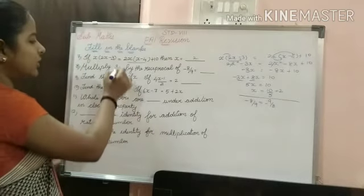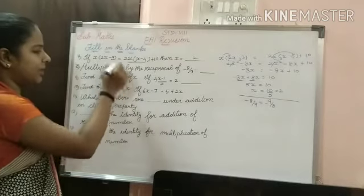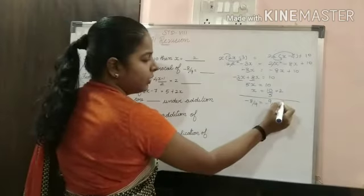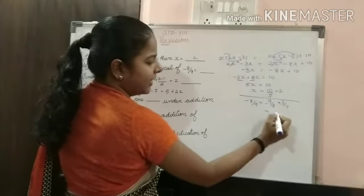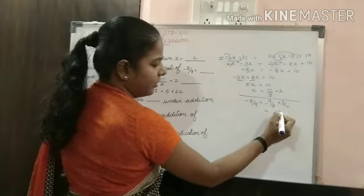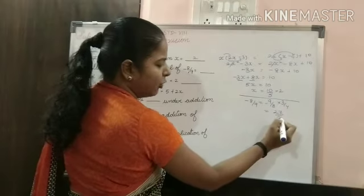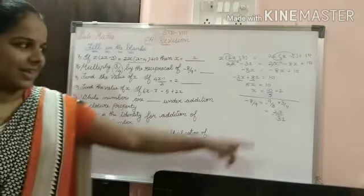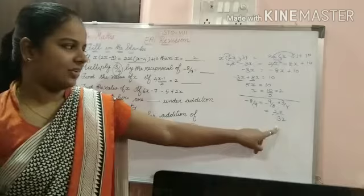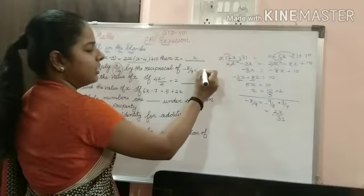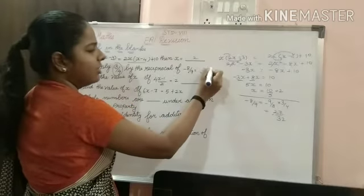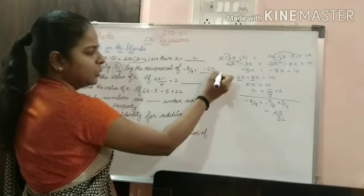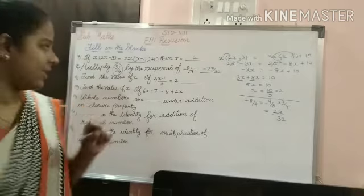So we multiply 3/4 by 9/8. Calculating: 9 times 3 is 27 and 8 times 4 is 32. The minus sign remains as it is. So the answer is minus 27 by 32.